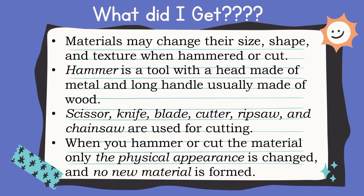What did I get? There are lots of different actions to change the properties of materials. Materials may change their size, shape, and texture when hammered or cut. A hammer is a tool with a head made of metal and a long handle, usually made of wood. Scissors, knife, blade, cutter, rip saw, and chainsaw are used for cutting. When you hammer or cut a material, only the physical appearance is changed and no new material is formed.